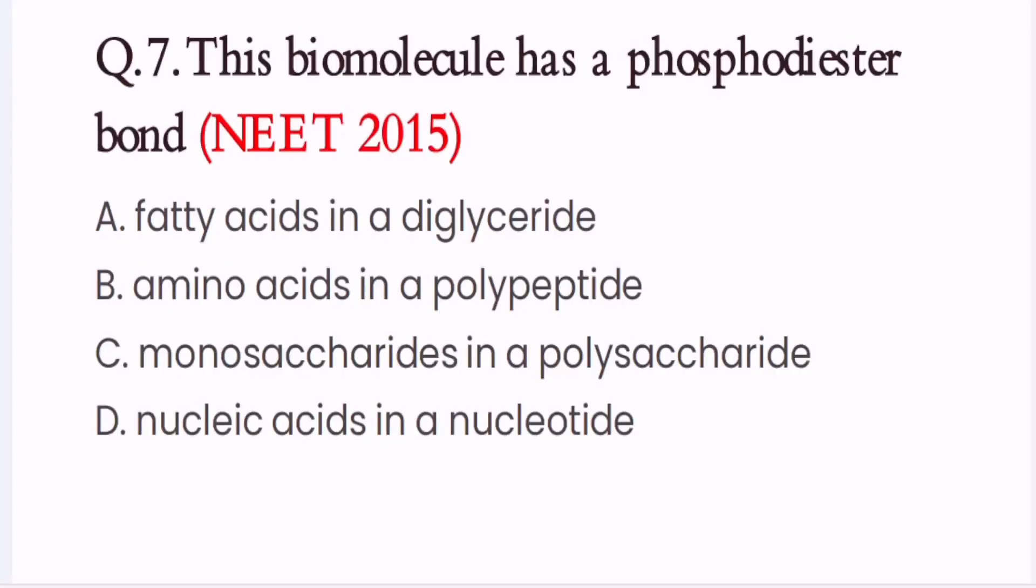Question 7. This biomolecule has a phosphodiester bond. A. Fatty acid in a diglyceride. B. Amino acids in a polypeptide. C. Monosaccharides in a polysaccharide. D. Nucleic acid in a nucleotide. So here the correct option is D. Nucleic acid in a nucleotide.